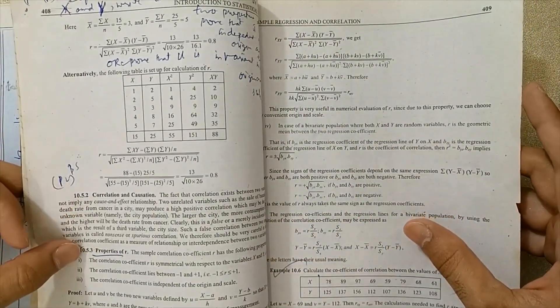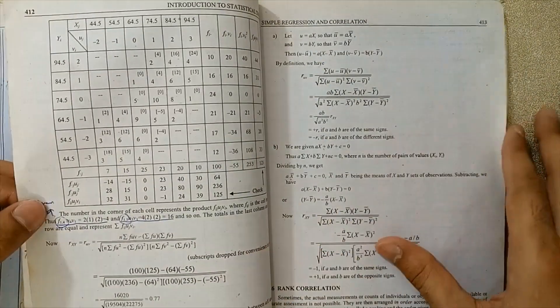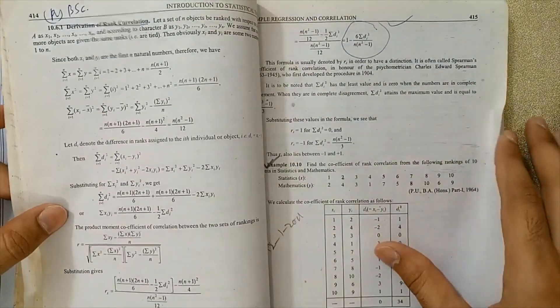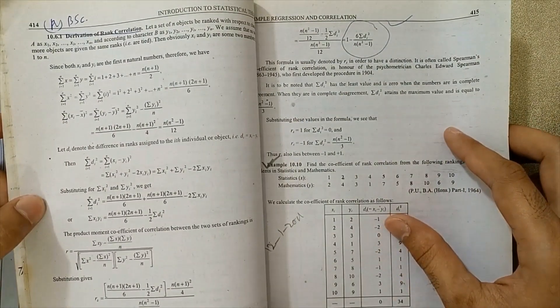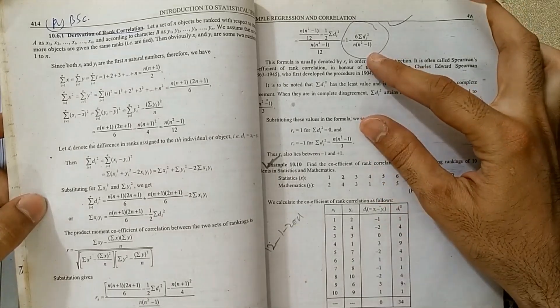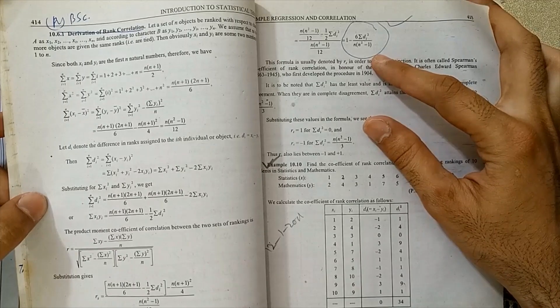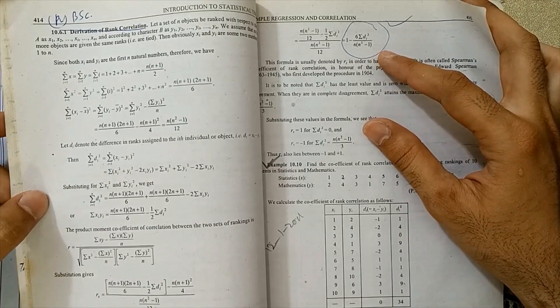Next, properties of correlation coefficient are also very important. Next, derivation of rank correlation is very important. What is the proof of rank correlation? I've already discussed in the lecture how to prove the rank correlation. You can watch this lecture by viewing the playlist of this channel.